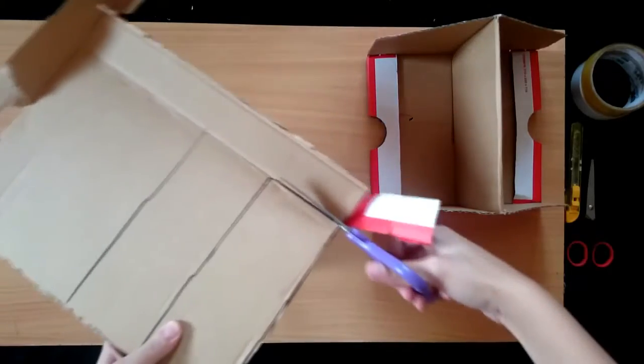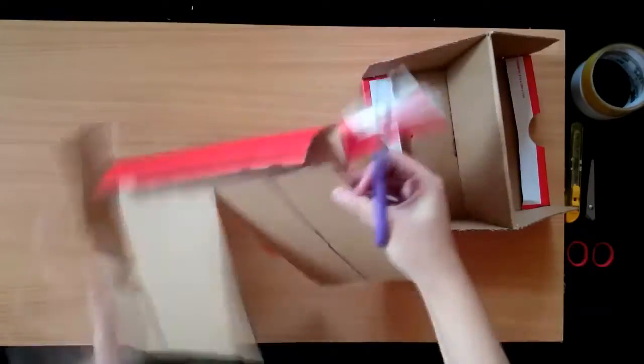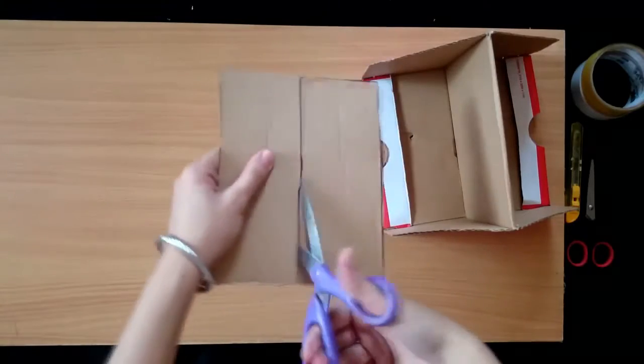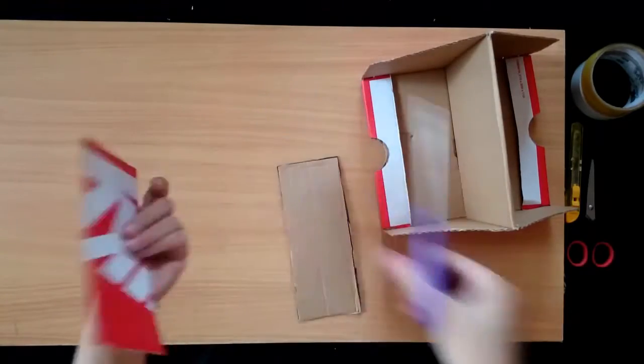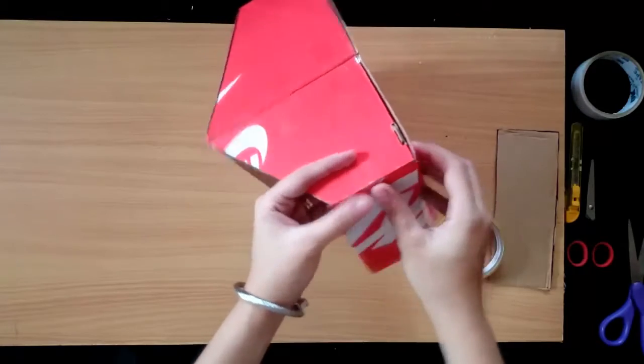Cut the rectangle. Use tape or glue gun to attach the sides.